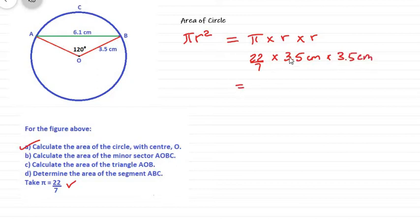Now working this out, 22 over 7 times 3.5. Now, of course, we can think of this as a numerator. Now 3.5, if we should add it to itself, give us 7. In other words, 3.5 into 7 goes twice. Now 2 into 2 goes once, and 2 into 22 goes 11 times.